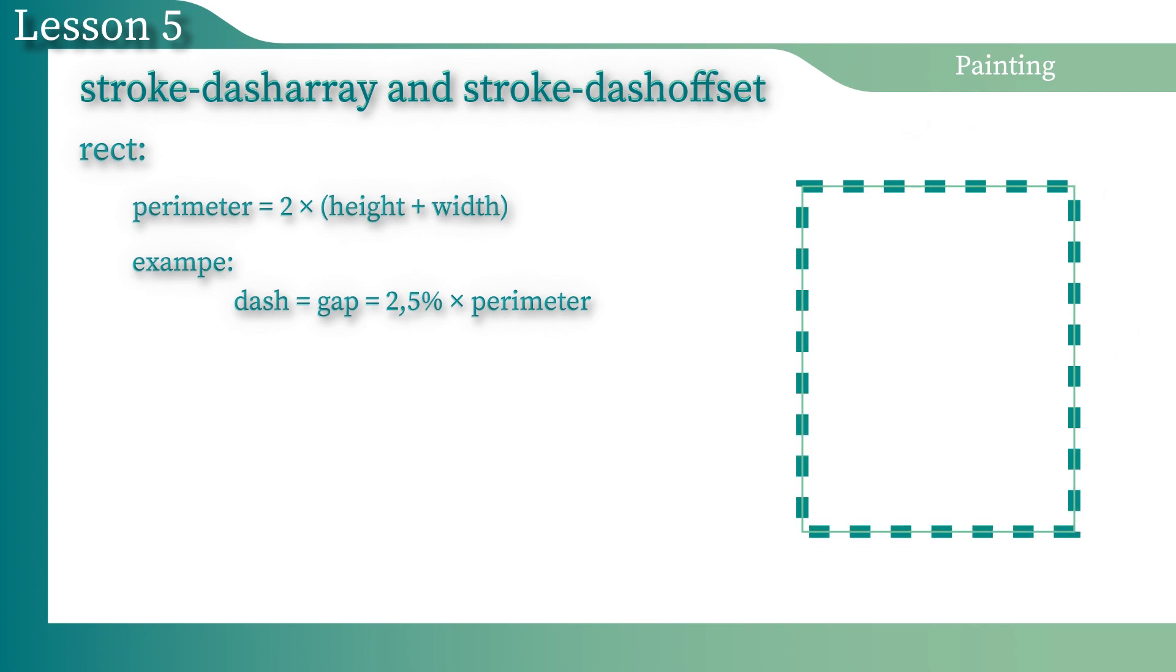In some cases, you could find yourself in situations when the correctly calculated values will give you a horrible result. So, like in our case, the dashes and gaps are both equal to 2.5% of the rectangle's perimeter. You can see that everything looks great, except the corners of the rectangle. So, how can we fix this?